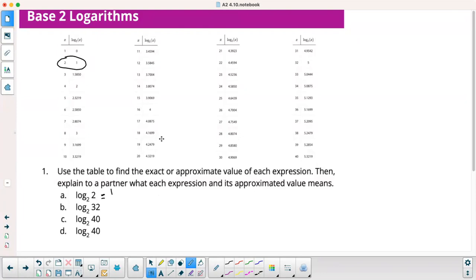Log base 2 of 32. I kind of already did that. That was 5. This one in your book should say 15. Log base 2 of 15. So that's right there. That's 3.9069. And then this one log base 2 of 40 is right here. So that's 5.3219.